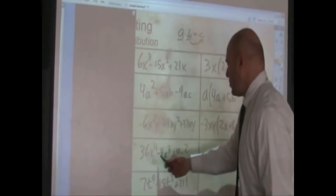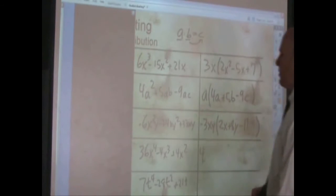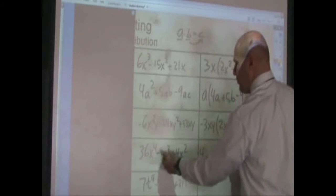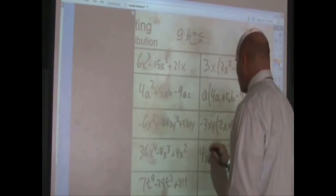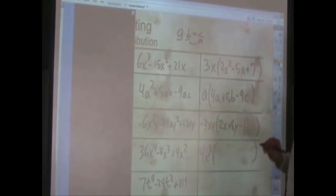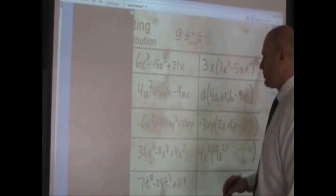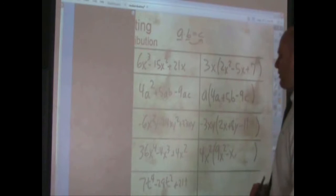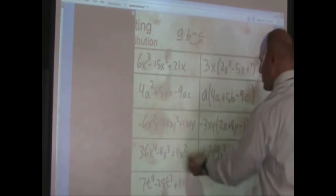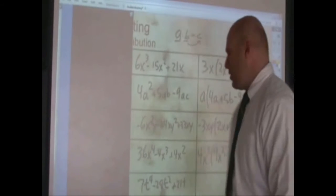First of all, looking at the numbers, 36, 4, and 4 are all multiples of 4. Since the 36 is positive, I'm just going to pull out a positive 4. x to the fourth, x to the third, x squared means I can pull out an x squared because two x's are common to all of them. So I'm going to pull out 4x squared. So that's going to leave 9x squared in the first position. When I divide by four, that makes negative or the opposite of x there.